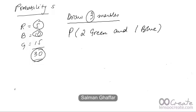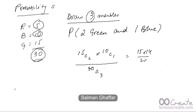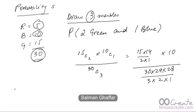The solution is as follows. The probability of getting two green out of 15 is 15C2, and one blue is 10C1, divided by 30C3. This equals 15C2—which is 15 times 14 over 2 times 1—times 10C1, which is 10, divided by 30C3, which is 30 times 29 times 28 over 3 times 2 times 1. This simplifies to 15 out of 58.